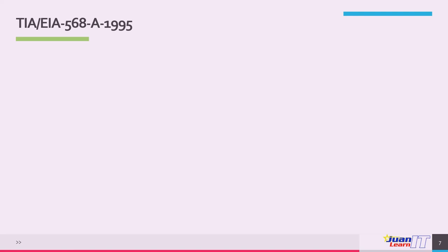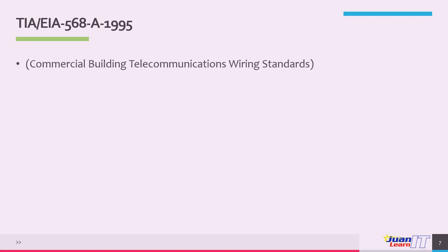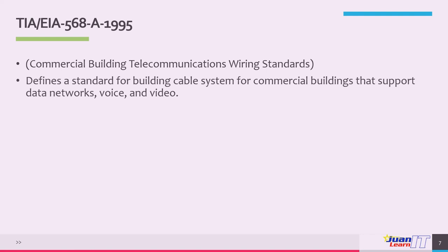The TIA EIA 568A series of 1995 covers commercial building telecommunications wiring standards. It defines a standard for building cable systems for commercial buildings that support data, voice, and video. It also defines the technical performance criteria for cabling.